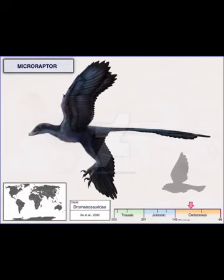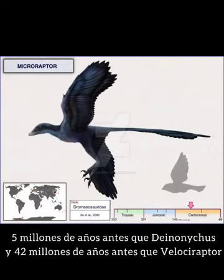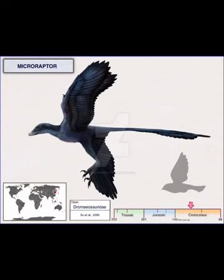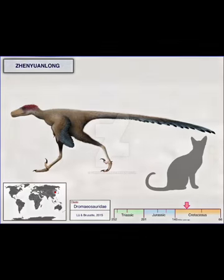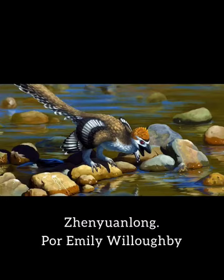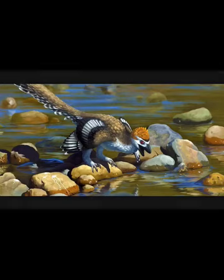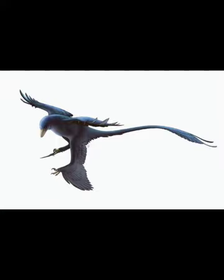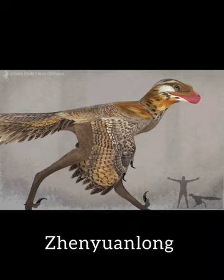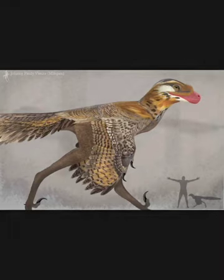Ocurre algo muy parecido con Microraptor del Cretácico Inferior, datado 5 millones de años antes que Deinonychus y 42 millones de años antes que Velociraptor. También con Chenyuanglong, datado 17 millones de años antes que Deinonychus y 54 millones de años antes que Velociraptor. Chenyuanglong y Microraptor son especies basales, ya que guardan un sorprendente parecido con las aves actuales. Si frente a nosotros pasaran Microraptor o un Chenyuanglong, lo más probable es que diríamos que eran otros géneros de aves, llanamente.